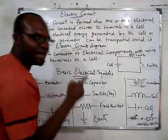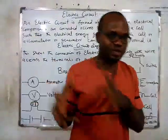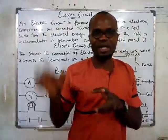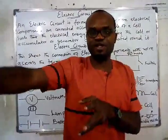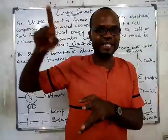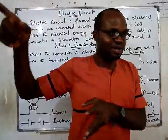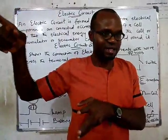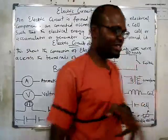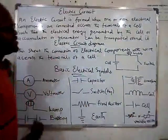Dams can also supply electricity. For example, the major source of our electricity in Nigeria is Kainji Dam. There is also Shiruru Dam. Gas plants can also supply electric charges that can flow, forming electricity.